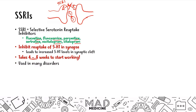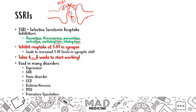SSRIs are used in many, many disorders — not only depression, but also generalized anxiety, panic disorder, OCD, bulimia nervosa, anorexia nervosa, PTSD, as well as premature ejaculation. SSRIs are, in my opinion, the quintessential drug you can always choose if you don't know what to give. If you have a question where you're unsure what drug to give for a certain disorder, most often it's going to be an SSRI. It's used in the majority of Step 1 psych cases.